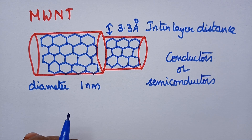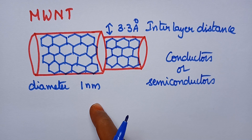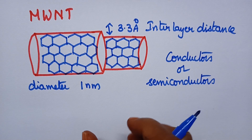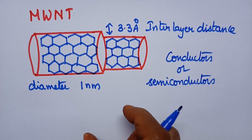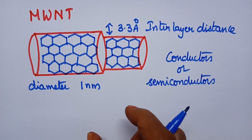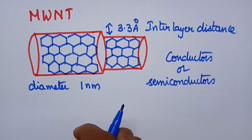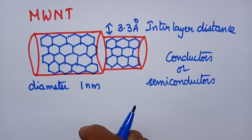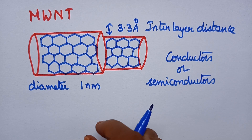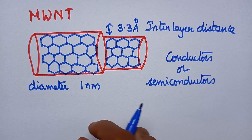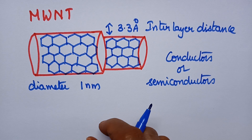Carbon nanotubes can be obtained by rolling a graphene sheet, resulting in the formation of a tube-like structure. Those tubes are called carbon nanotubes. Carbon nanotubes are classified into two categories: single-walled carbon nanotubes and multi-walled carbon nanotubes.